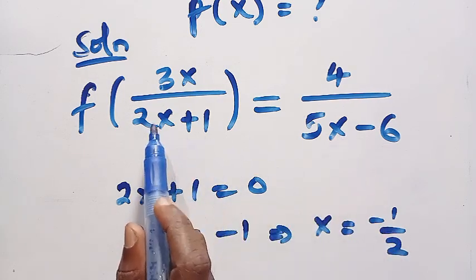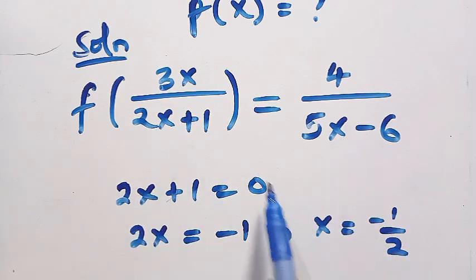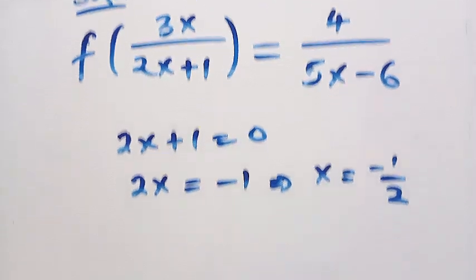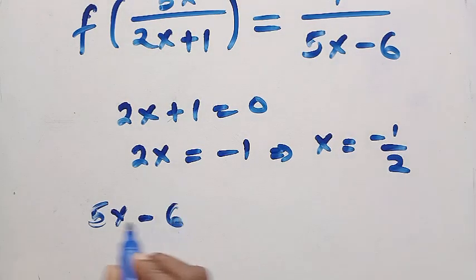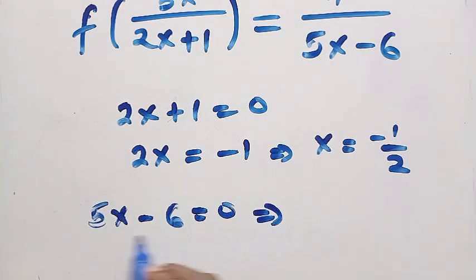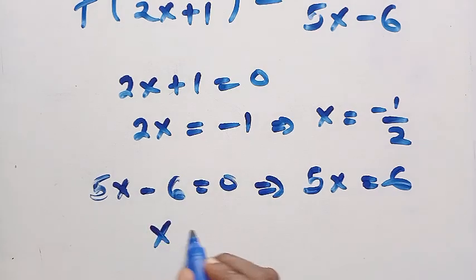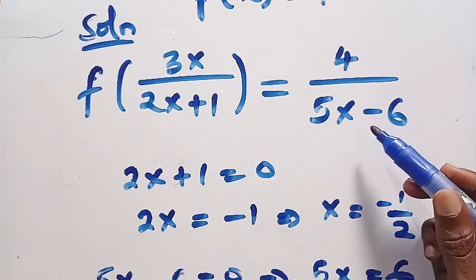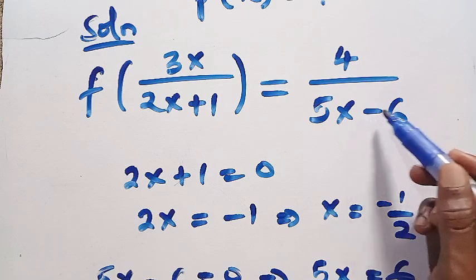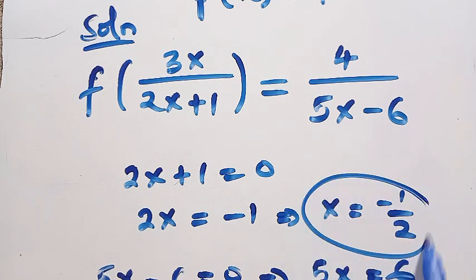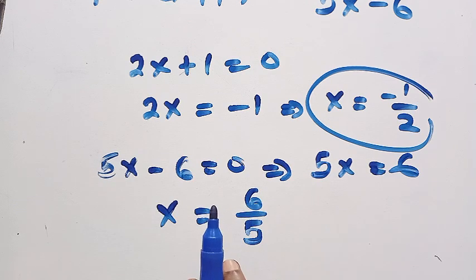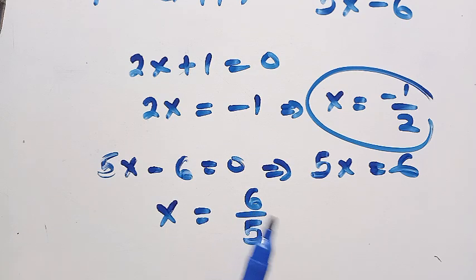The input satisfies this domain, but not all values satisfy the output. We also let 5x minus 6 equal 0, which gives 5x equals 6, so x equals 6 over 5. At x equals 6 over 5 this is not valid either, as it leads to zero in the denominator. We must exclude x equals minus 1 over 2 and x equals 6 over 5 to have a well-defined function. All other numbers are valid. Now let's find f of x.